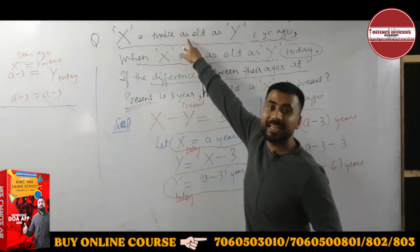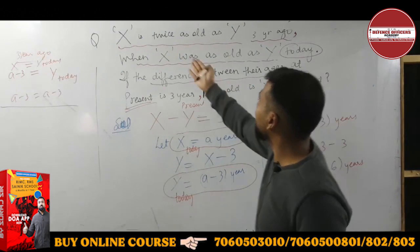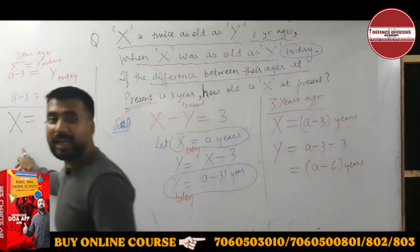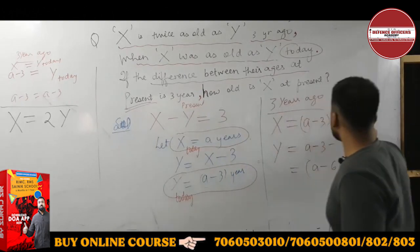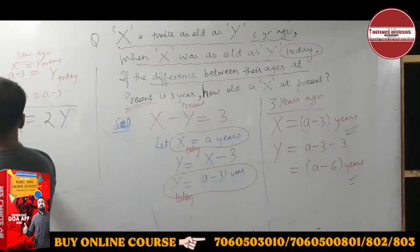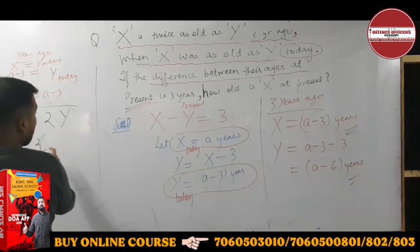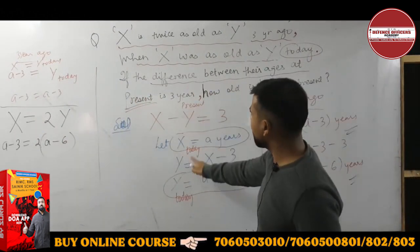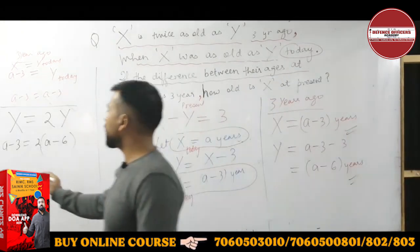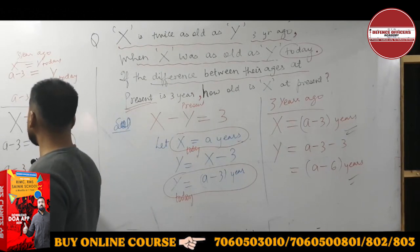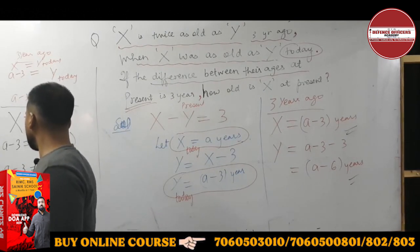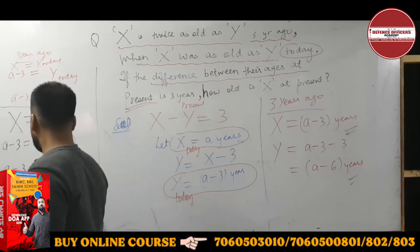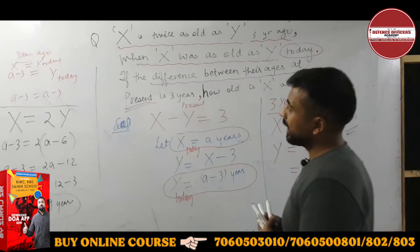Now apply the first condition: 3 years ago, X is equal to twice as old as Y. Using the 3-years-ago values: X's age was a minus 3, and Y's age was a minus 6. So: a minus 3 equals twice of (a minus 6), which gives a minus 3 equals 2a minus 12, so 2a minus a equals 12 minus 3, therefore a equals 9 years. The age of X is 9 years.